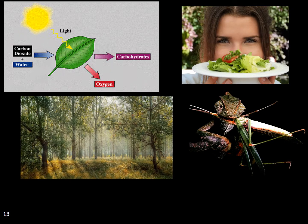Plants, just like animals, require energy and material resources to stay alive, grow, and reproduce. Unlike animals, plants get their energy directly from the sun in the form of light energy. This energy is then used to transform carbon dioxide and water into energy-rich carbohydrates, and later, through other metabolic pathways, into other organic molecules essential for life.